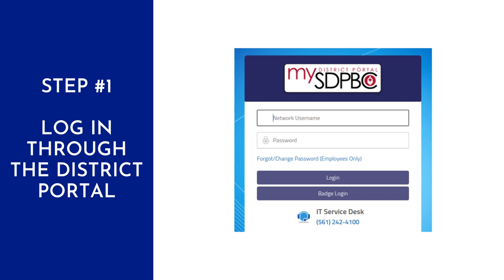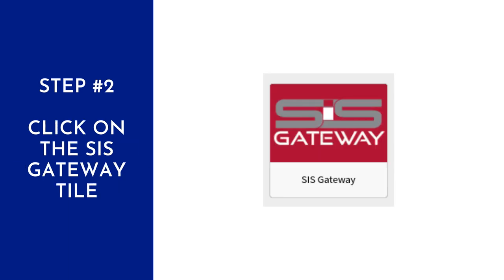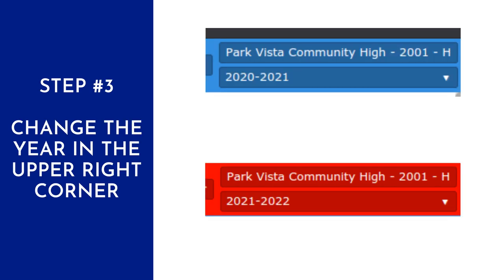The first step is to log in through the district portal with their district username and password. Step 2 is to click on the SIS Gateway tile found in the portal. Clicking on the Gateway tile will open up the main page of SIS. In the upper right corner, they will see the current school year listed with an arrow for a drop-down menu. Using that menu, they will change the year to 2021-2022.